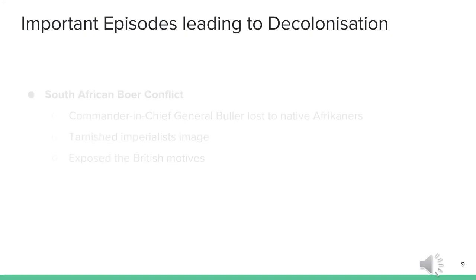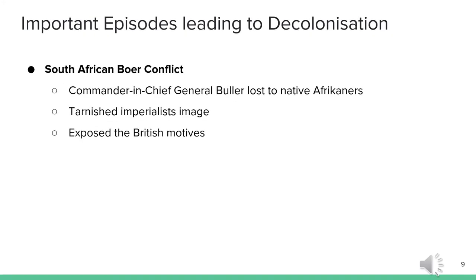The South African Boer conflict was one of the important episodes that contributed to the intensified crisis and eventually the collapse of the British Empire. The Boer conflict, led by commander-in-chief General Buller, who lost at the hands of native Afrikaners on January 24, 1900 in South Africa, was a major embarrassment for the British. This conflict tarnished the image of the imperialists and exposed the ill motives of British rule among the colonies.